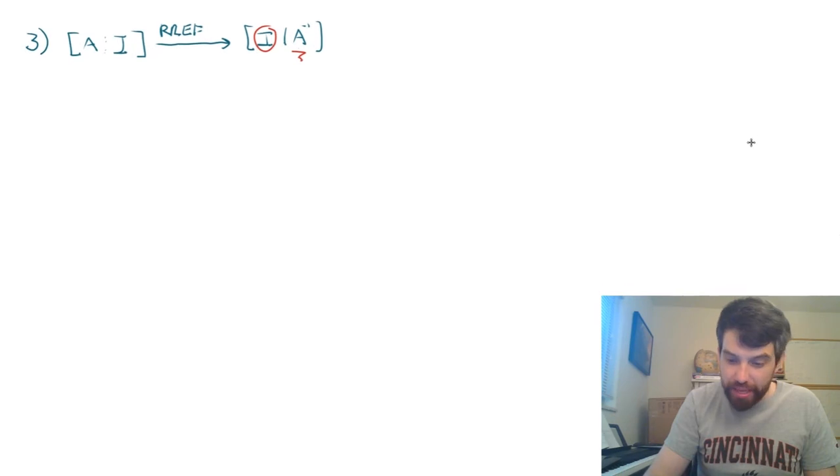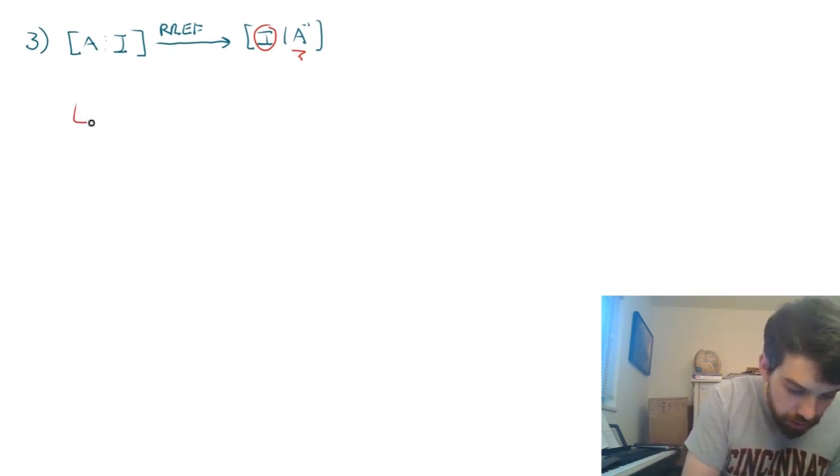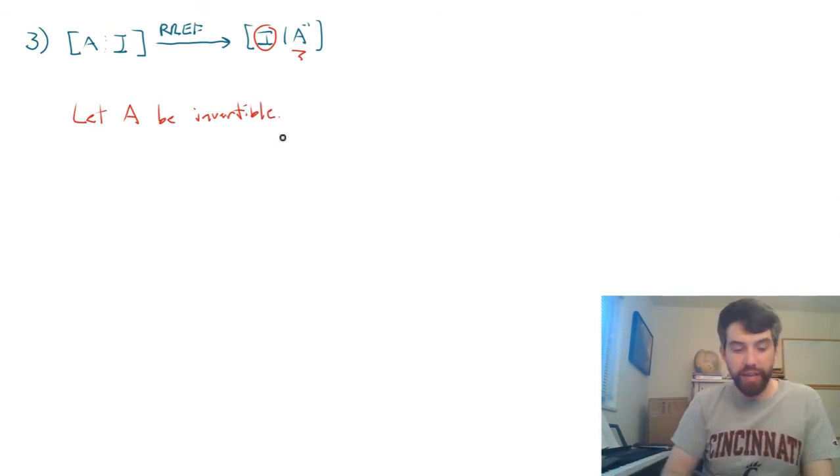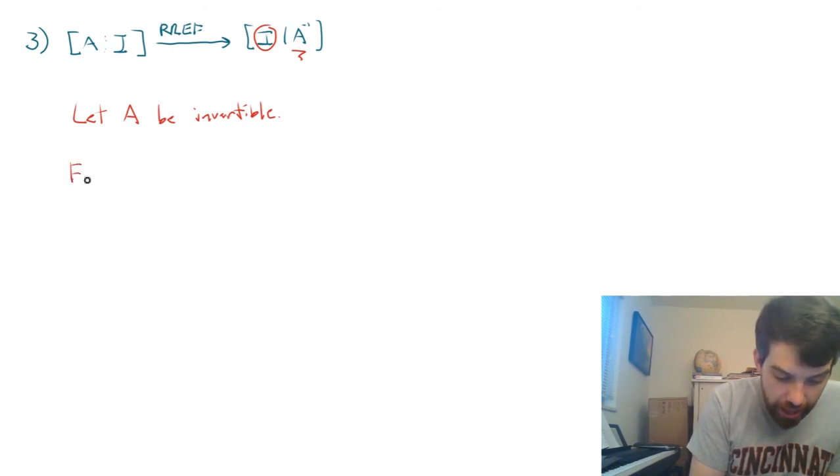We want to begin with the assumption. So I'm going to begin with A being invertible. Let A be invertible. Now, this meant a couple different things, but one of the things it meant is that if I take a system like Ax equal to,